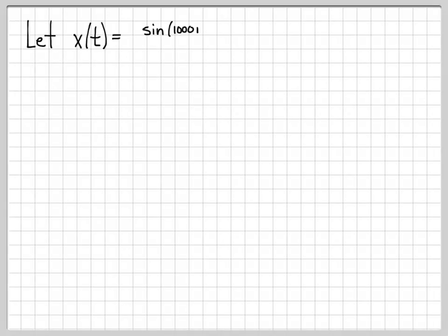This problem is similar to the one we just worked. We have x(t) equals sine a thousand pi t over pi t, but it's been squared. So instead of a sinc problem, we have essentially a sinc squared problem.